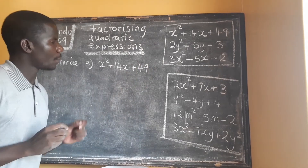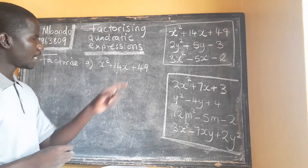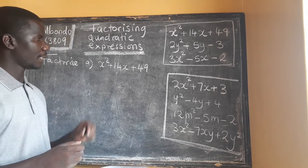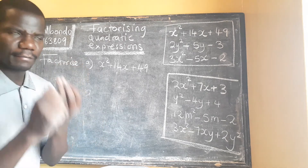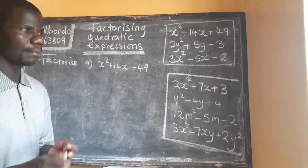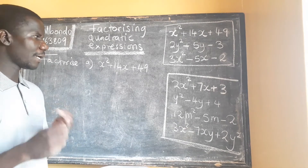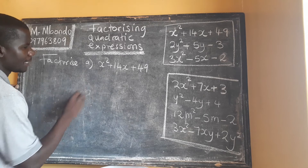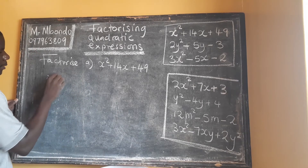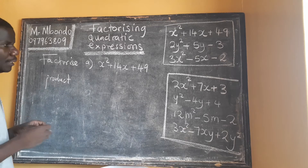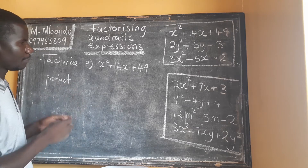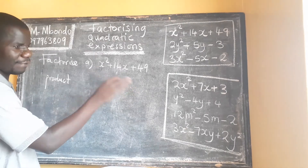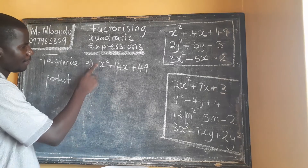So this is the quadratic expression. What is required for us to factorize this expression? We need to find the product, the sum, and then the factors. So how do we find the product? The product is going to be obtained by multiplying the coefficient of x squared by the constant.